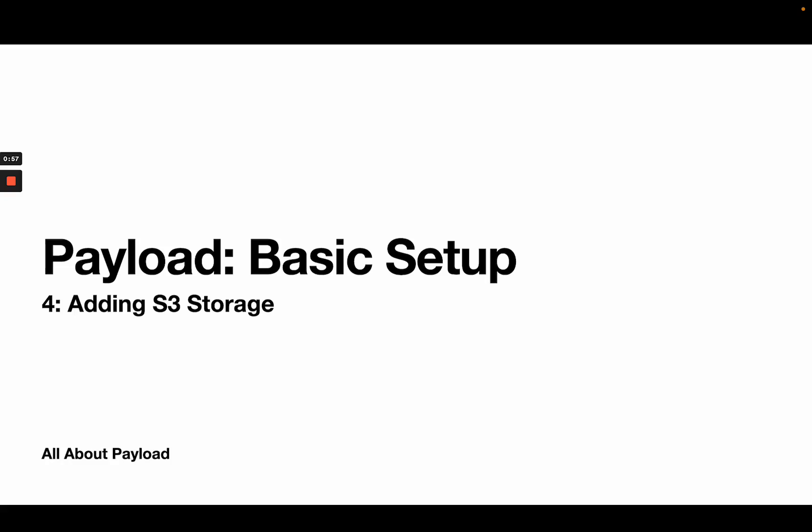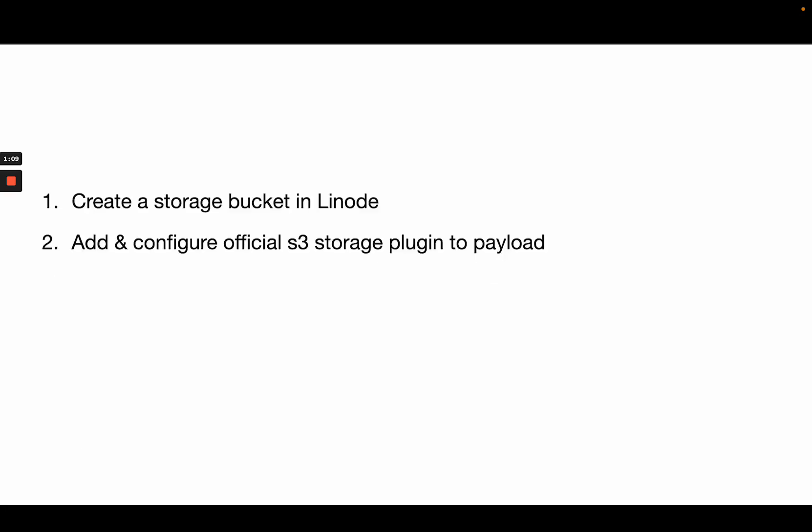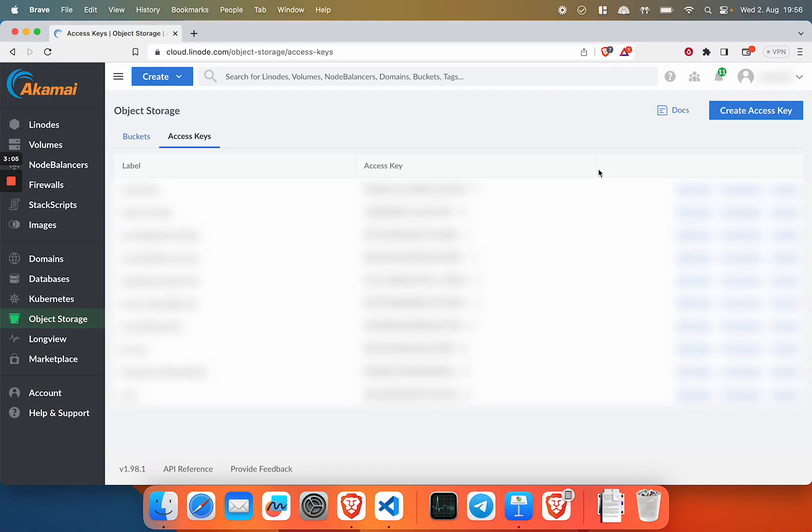Hey, what's up? This is the fourth part of our Payload Basic Setup video series. Today we are going to talk about how to add S3 storage to our Payload project. This is a very straightforward process. First, I'm going to show you how you can create a storage bucket, and we're going to be using Linode as our hosting provider. After that, we're going to add and configure the official S3 storage plugin for Payload to our project. Alright, let's get started.